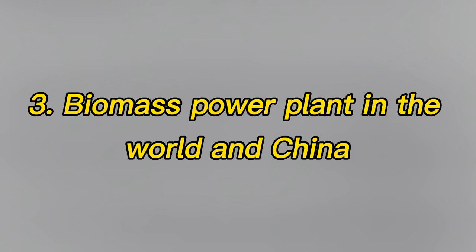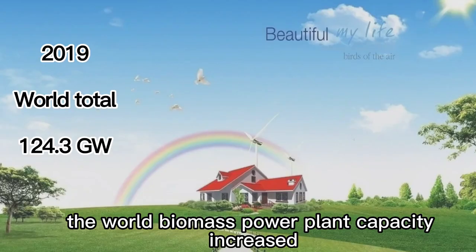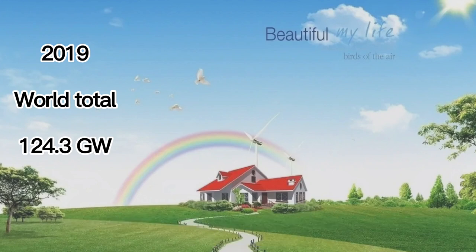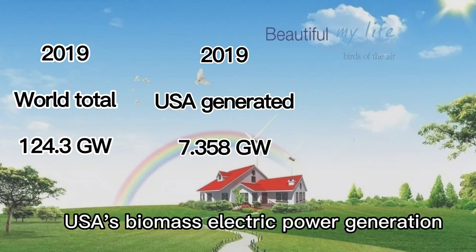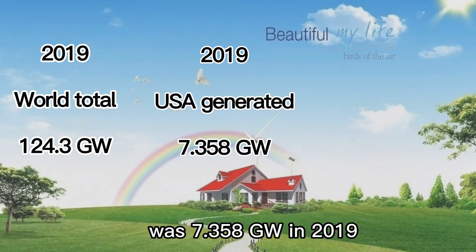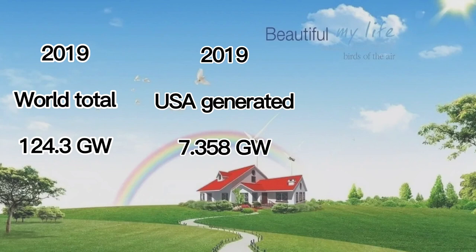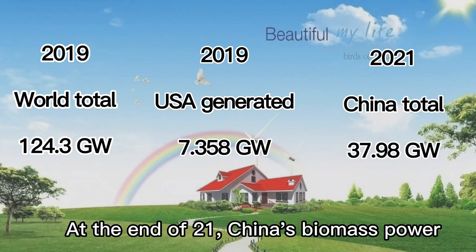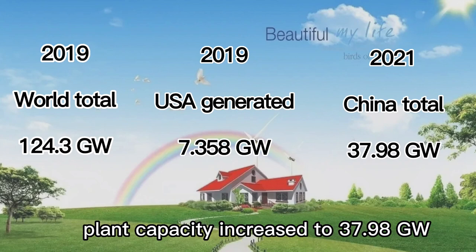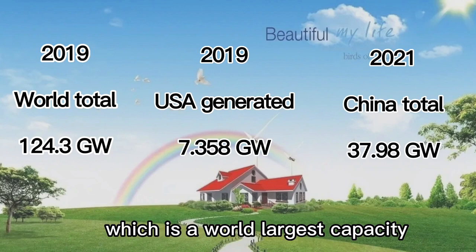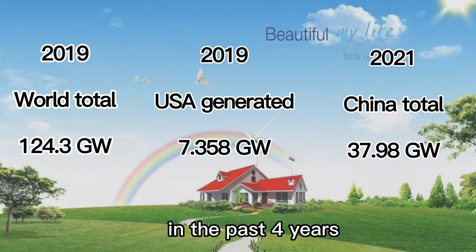3. Biomass Power Plant in the World and China. By the end of 2019, the world's biomass power plant capacity increased to 124.3 gigawatts. The U.S.'s biomass electric power generation was 7.358 gigawatts in 2019. At the end of 2021, China's biomass power plant capacity increased to 37.98 gigawatts, which is the world's largest capacity in the past four years.